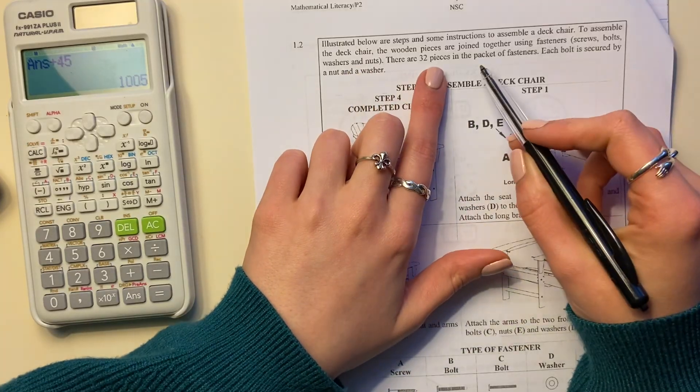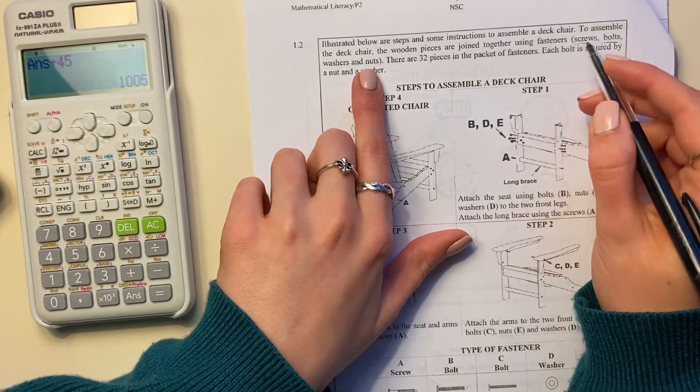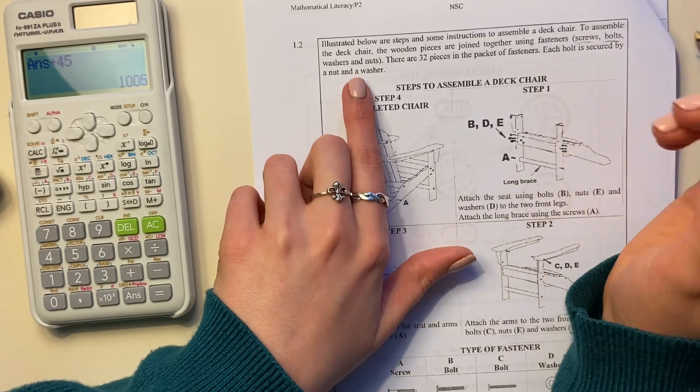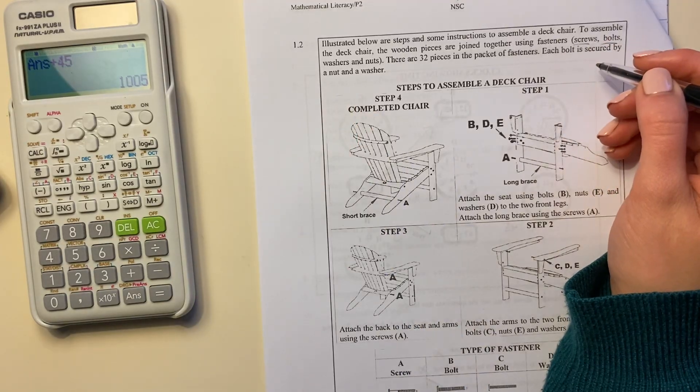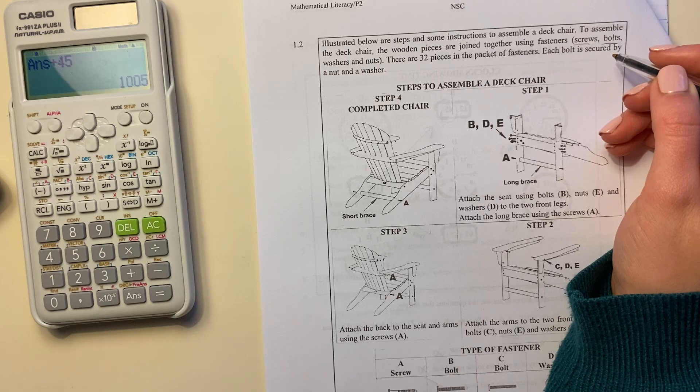There are 32 pieces in the packet of fasteners, so all of these together—screws, bolts, washers and nuts—have to add up to 32. It says each bolt is secured by a nut and a washer. Okay, that's perfect.